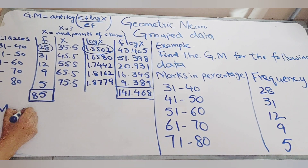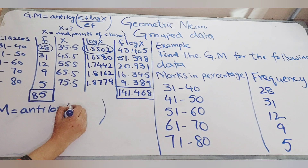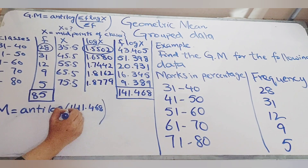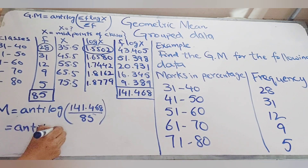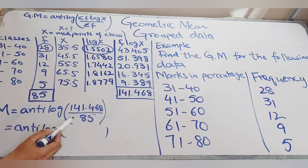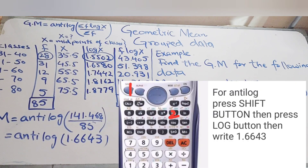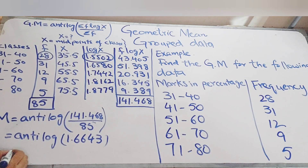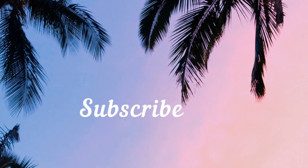Finally, substituting into the formula: geometric mean = antilog of (141.468 ÷ 85). Dividing gives 1.6643. To find the antilog on a calculator, press Shift, then Log, then enter 1.6643. The answer is 46.16 marks. That's it for today — please like this video and subscribe to the channel for more lectures. Goodbye!